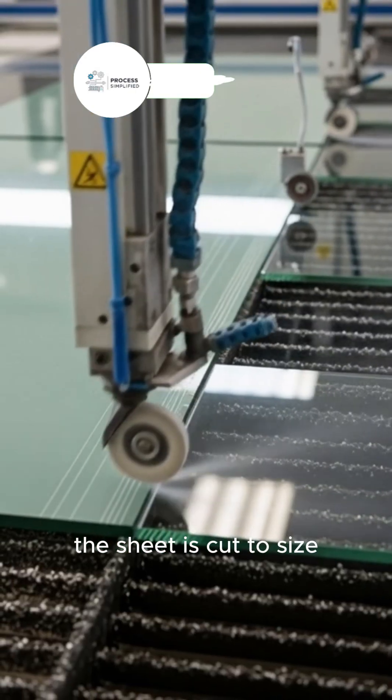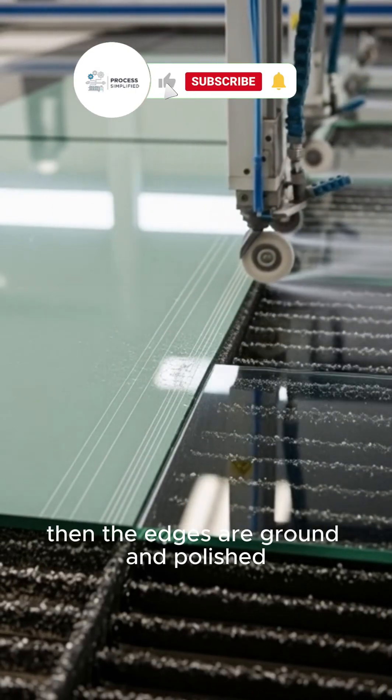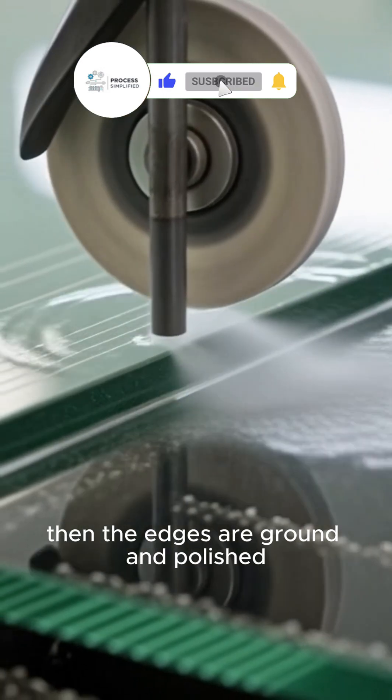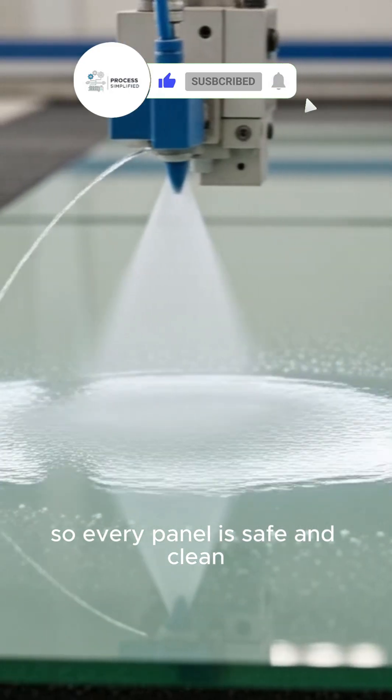The sheet is cut to size. Then the edges are ground and polished, so every panel is safe and clean.